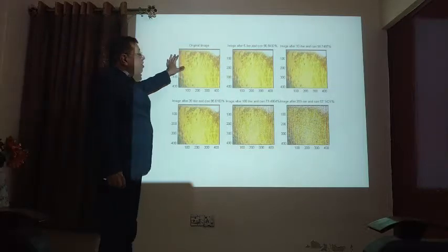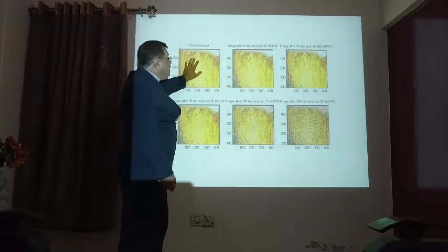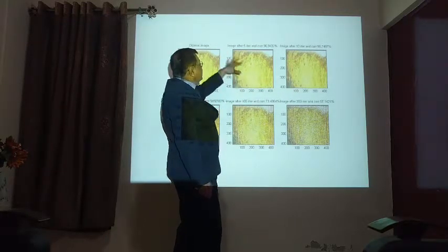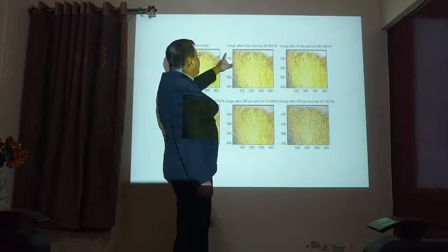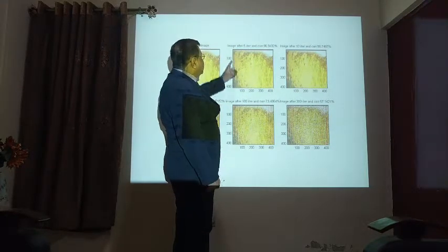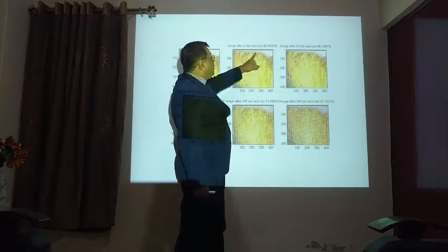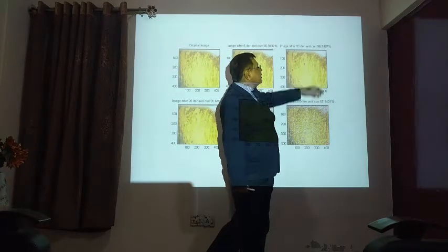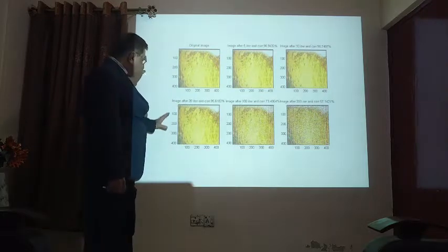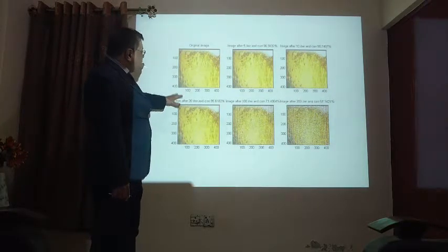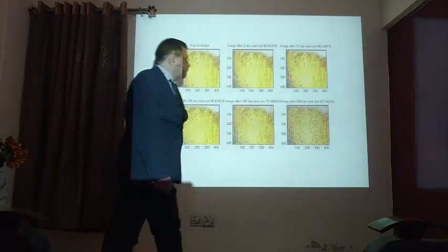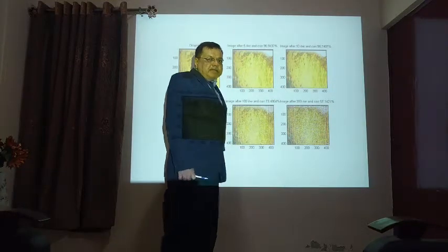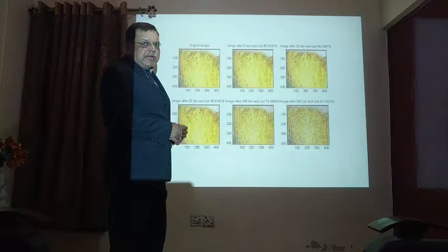This is an image of the fluid — the original image. We applied deep learning using an iteration algorithm on a 400 by 363 pixel image. After five iterations, we found a 96.94% correlation. We also ran up to 20, 100, and 200 iterations, and confirmed that after five to ten iterations, more than 90% correlation is achieved. Therefore, five to ten iterations are sufficient.